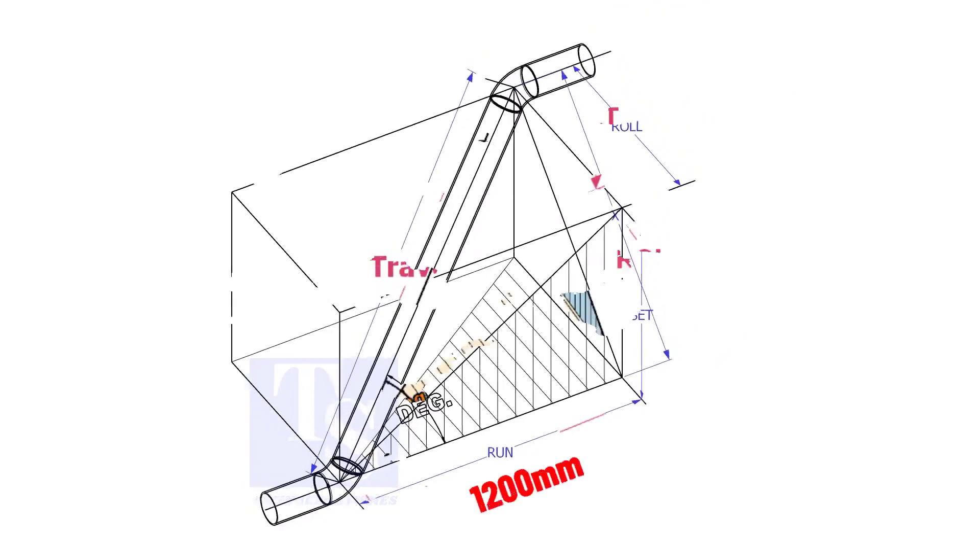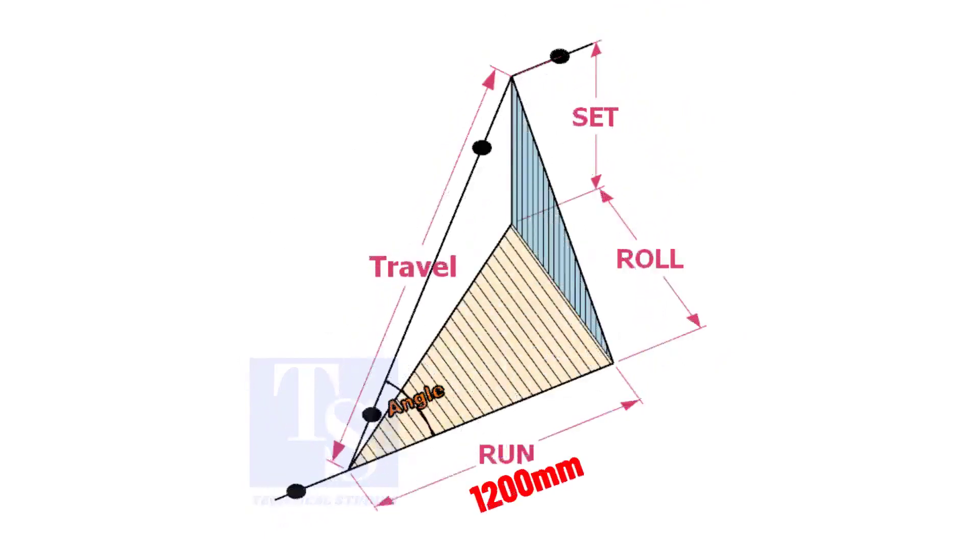Assume that the run is 1200 mm, set is 1000 mm, and the roll is 800 mm. Calculate the travel length.